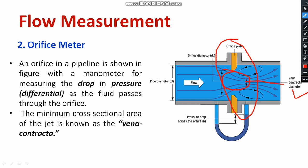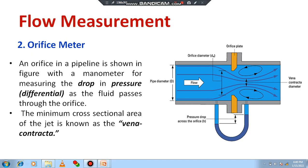That is generally called vena contracta, which is having the least diameter area. Here, the fluid flow will be restricted in this particular area. An orifice in a pipeline shown in figure with a manometer for measuring the drop of pressure. Here also you can see the manometer.